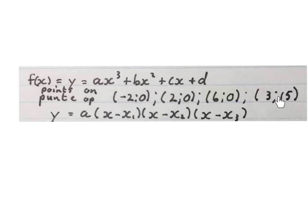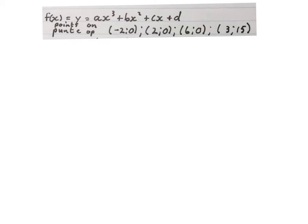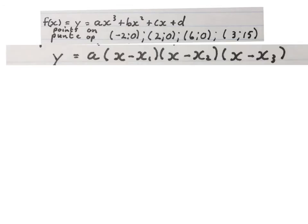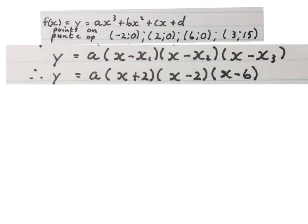In the first example, they gave us these coordinates and we can see that these are x-intercepts because the y value is 0 in each coordinate. That is an extra coordinate. You must learn the formula that we use when we are provided with the x-intercepts. Substitute the x values into x1, x2, and x3.